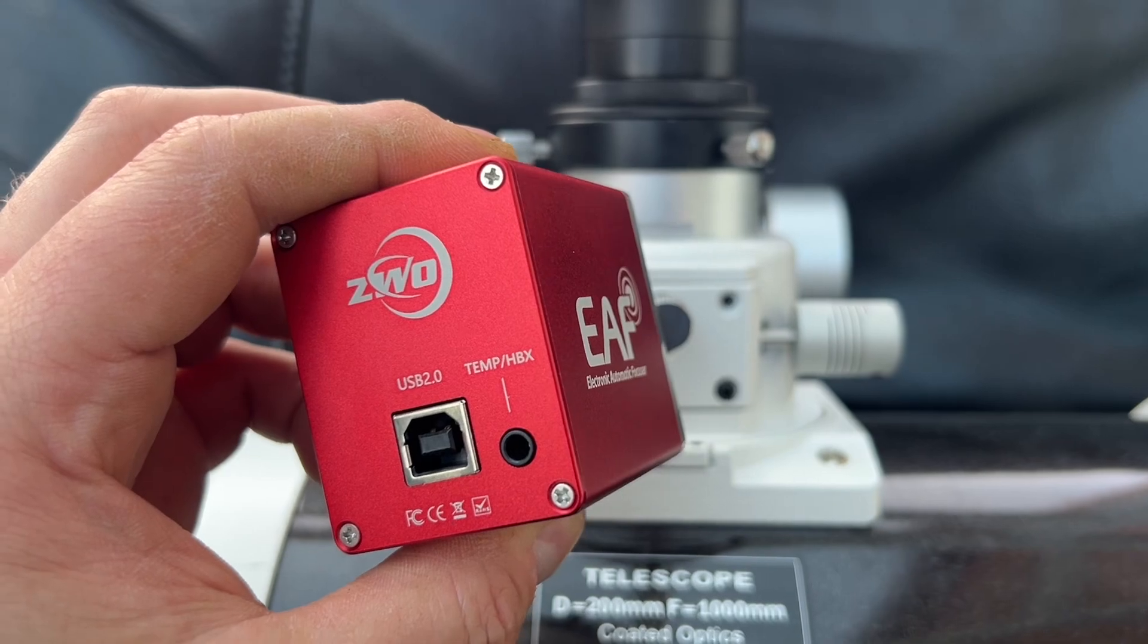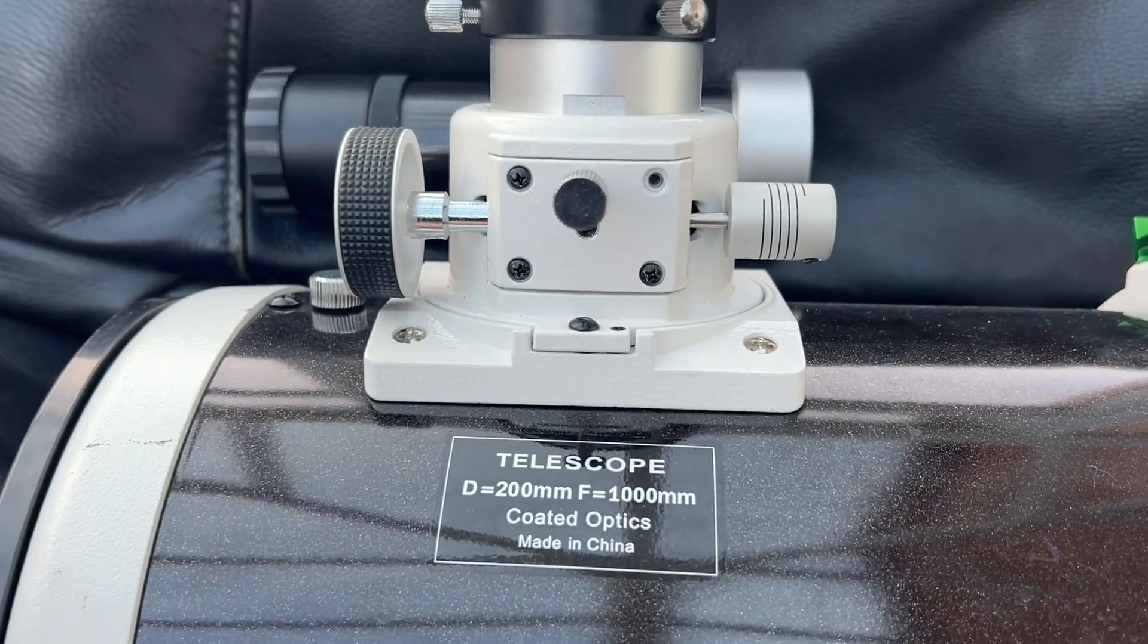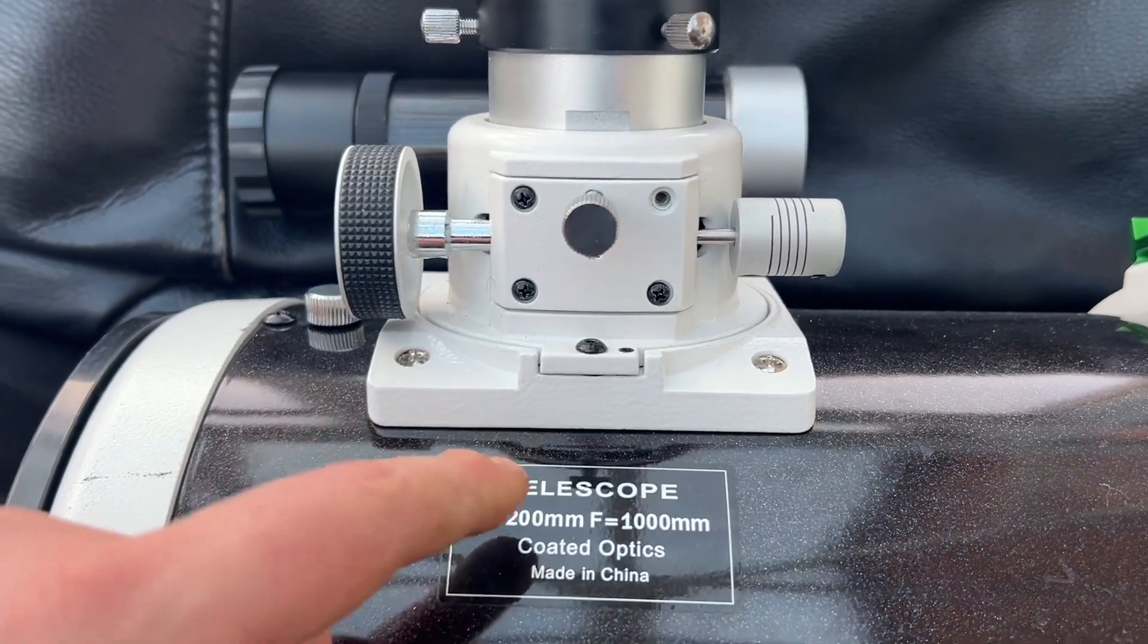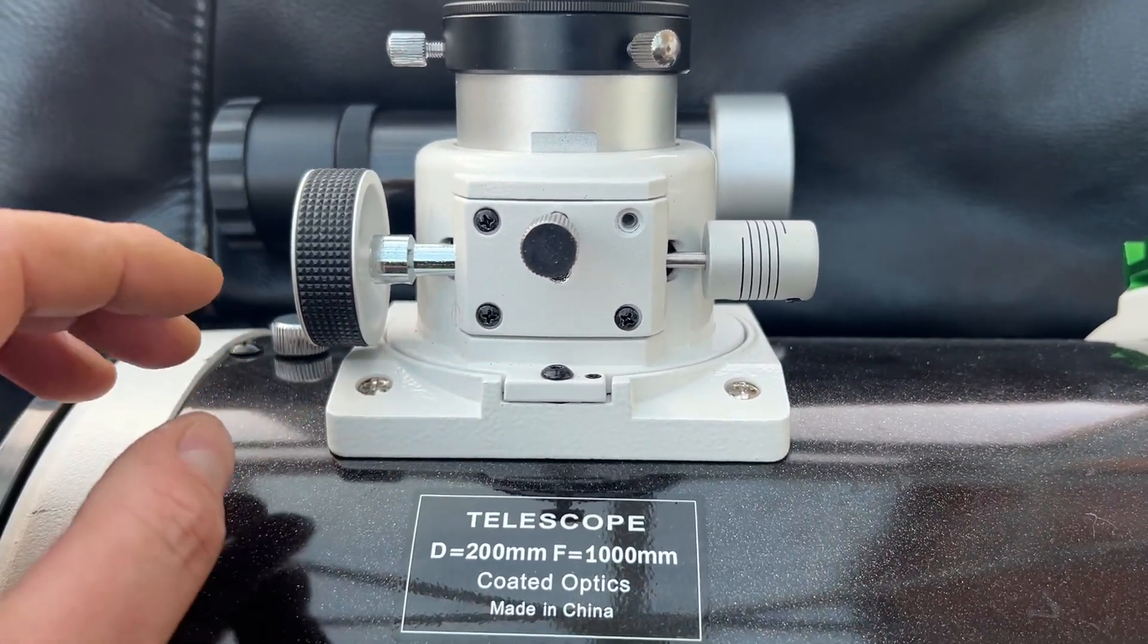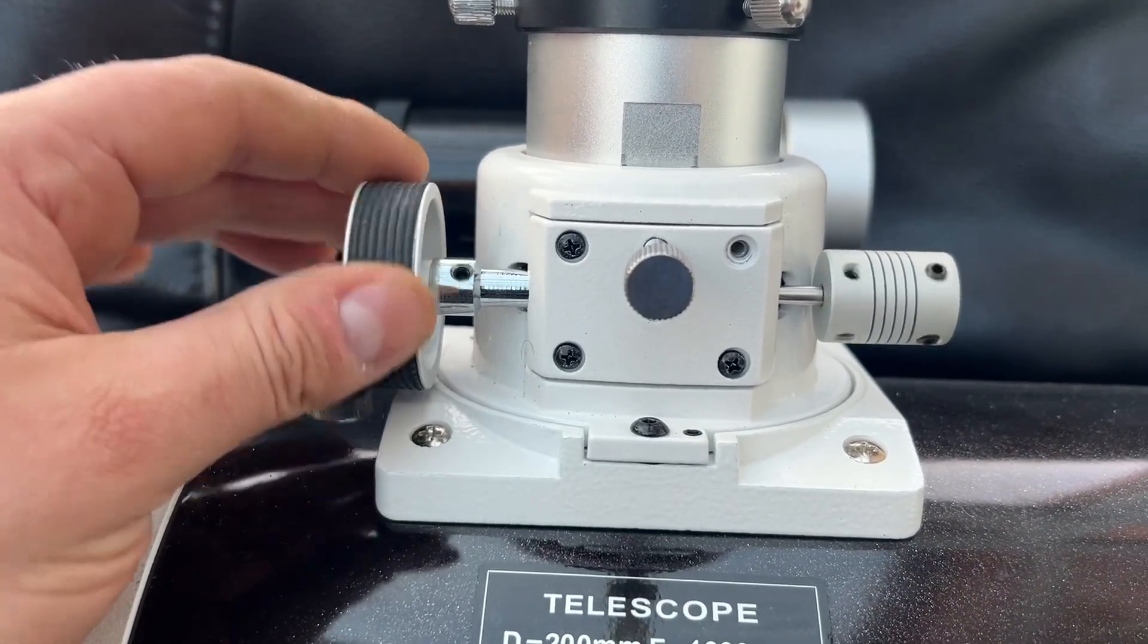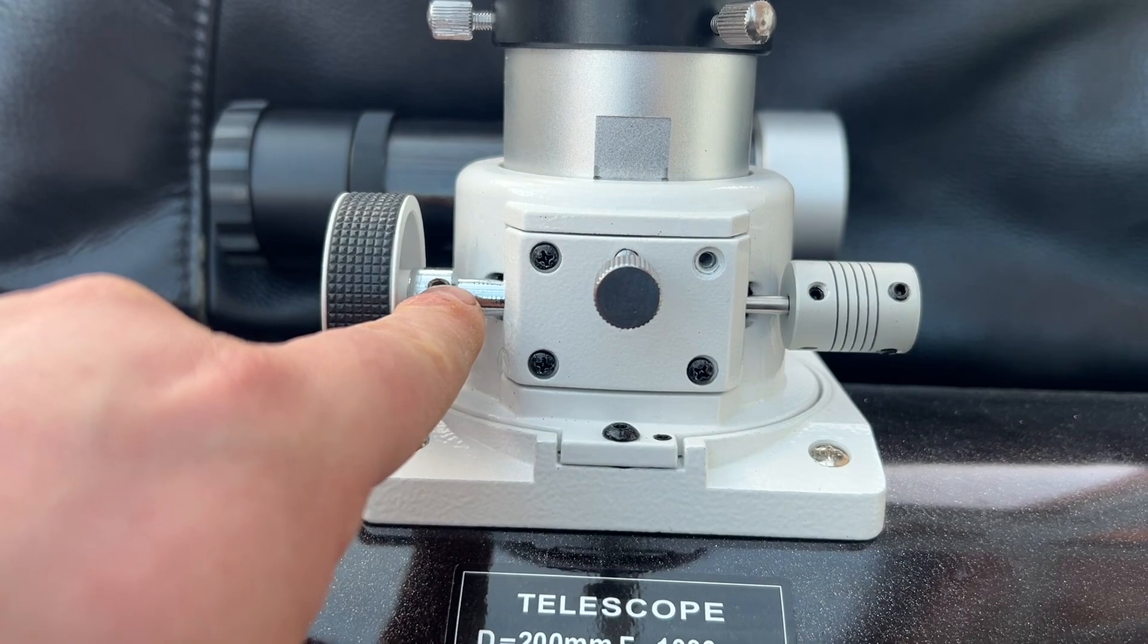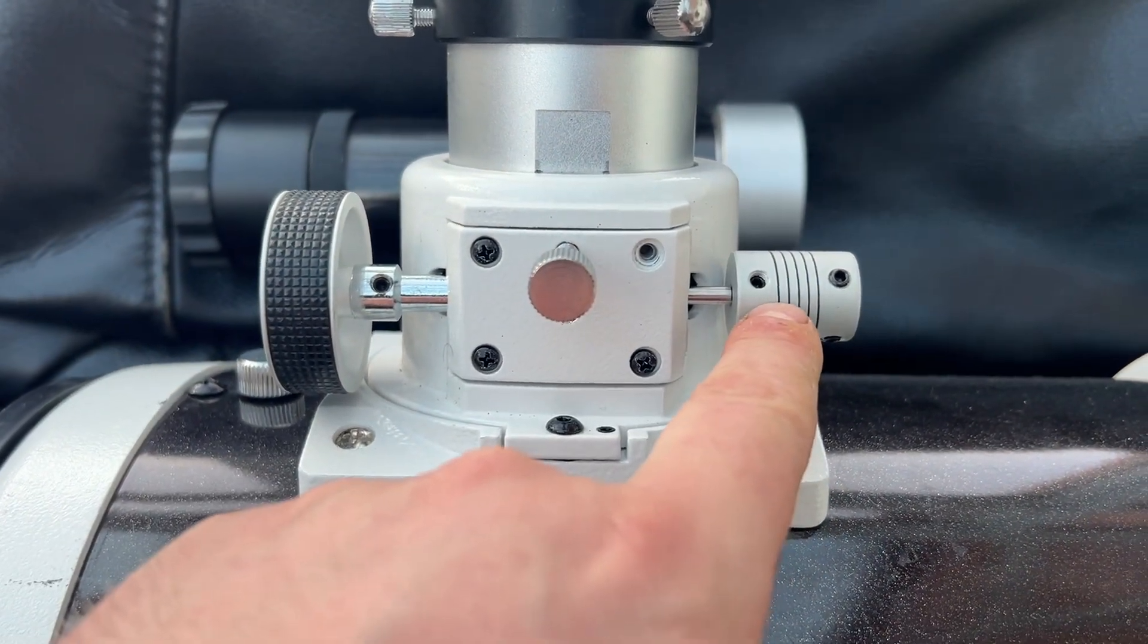Okay, so this is the ZWO EAF, the autofocuser, and we're going to try and fit this to the Skywatcher P200P. There are a few problems with this. You can remove the focuser handle by undoing the grub screw, and then the handle just pulls off like I've done there.